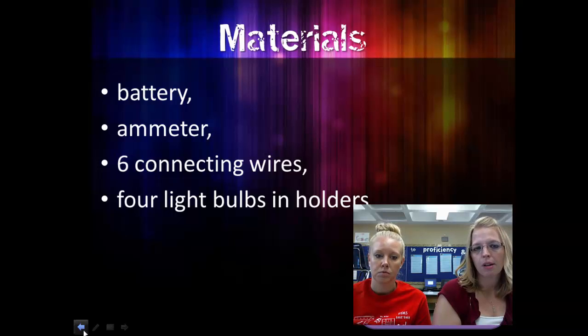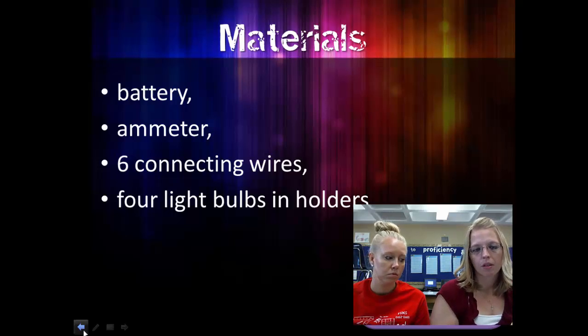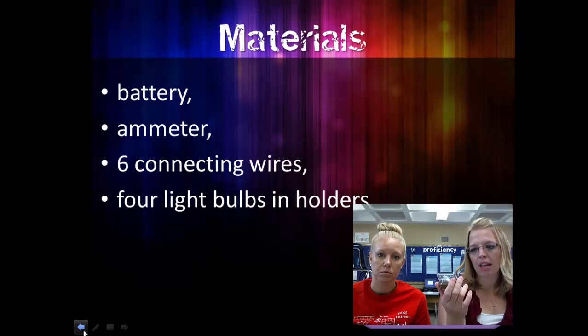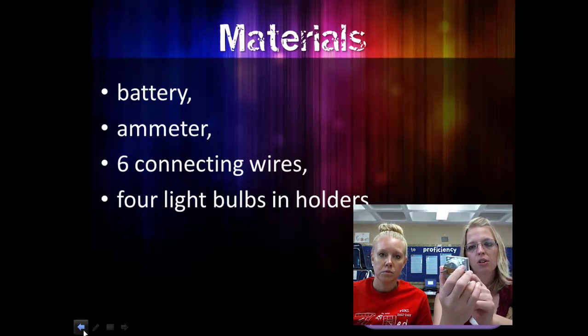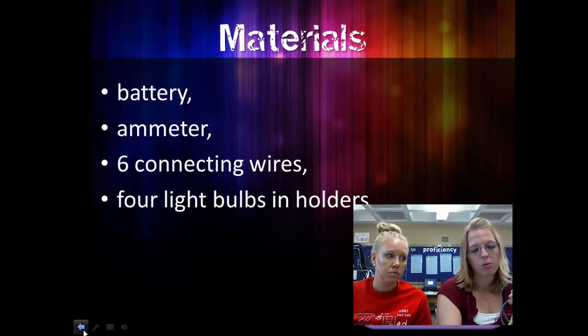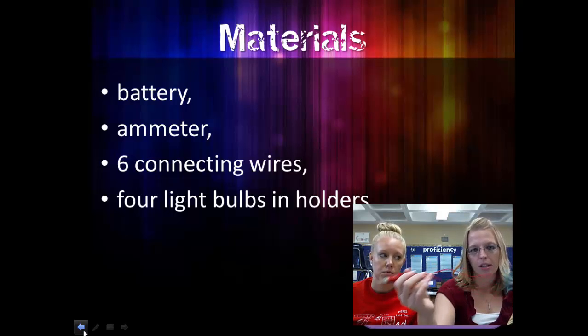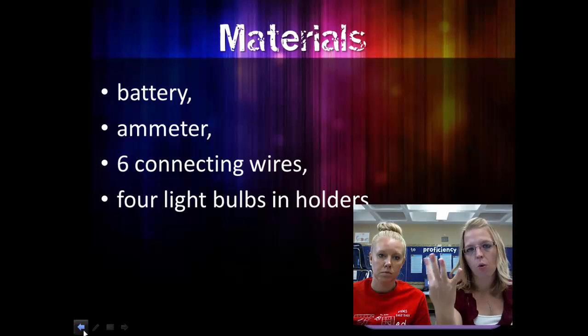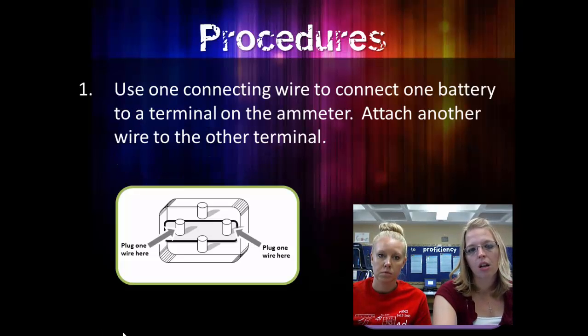Okay. When you are done with that, you'll get your supplies. You'll need battery inside the holder. We never write battery holder on our materials, but just assume. You need your ammeter. Our ammeters are black and say milliampere. That's our ammeter. You need six connecting wires. Remember, the color doesn't make a difference. It's just the color of dye they put on the rubber insulator. Six wires and four bulbs inside their respective holders.